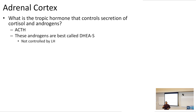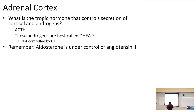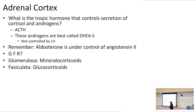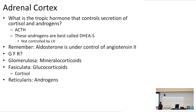The important part is that the glomerulosa is going to be under the effect or control of angiotensin II. Let's go through normal histology: glomerulosa, fasciculata, reticularis. Glomerulosa is related to mineralocorticoids, fasciculata is related to cortisol and glucocorticoids, and reticularis is going to be androgen related.